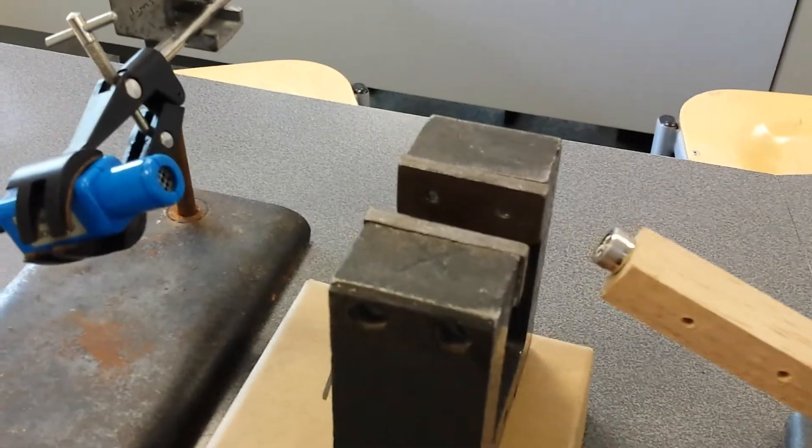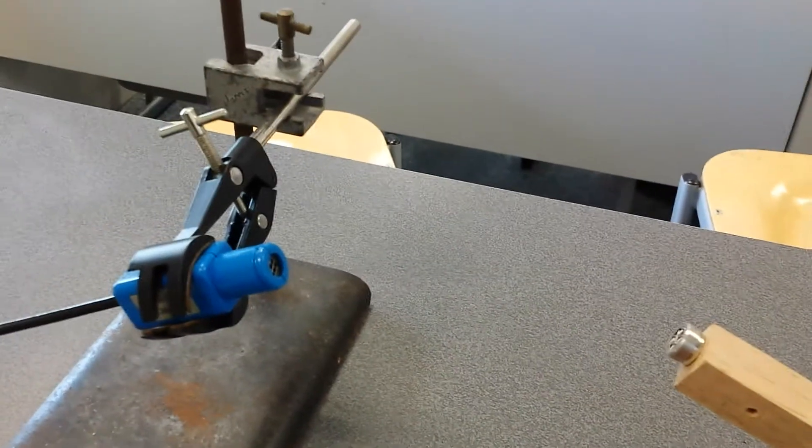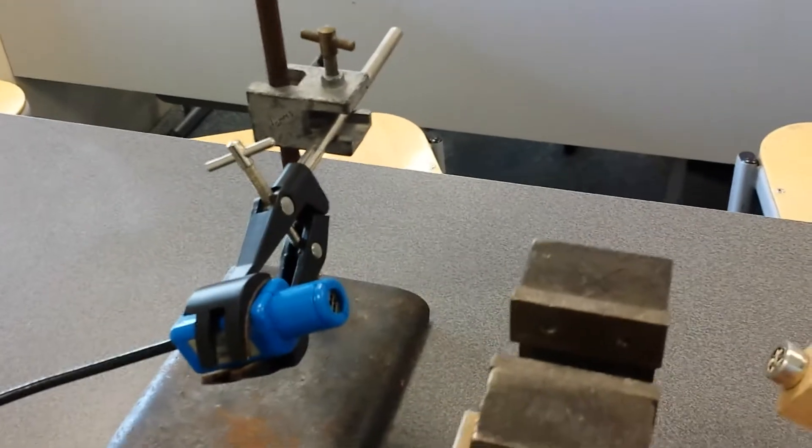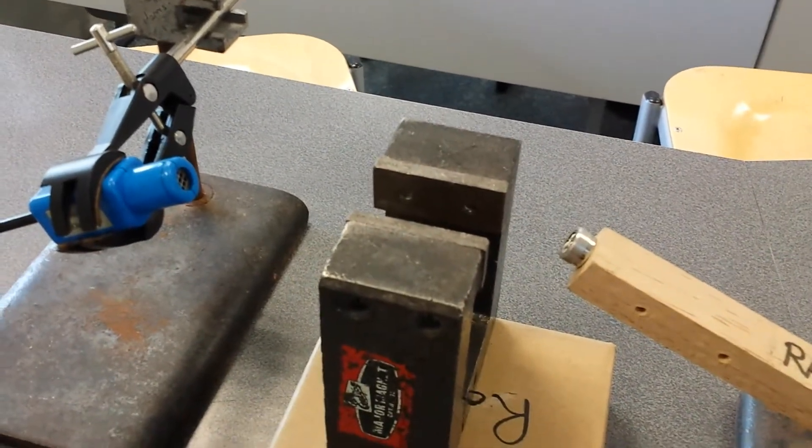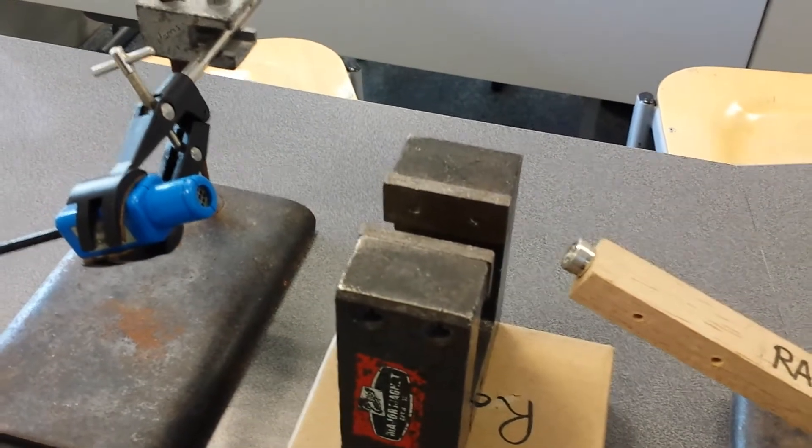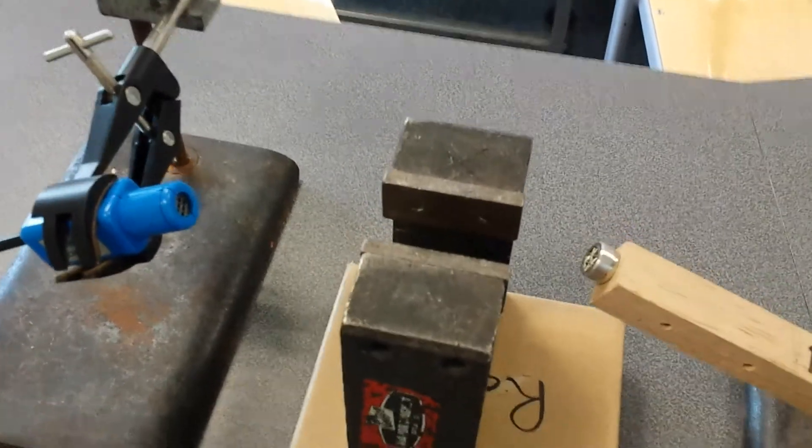Now let's see what happens if we take out the magnet and reverse the field. Suddenly the count rates have gone. We must be deflecting our beta radiation with a magnetic field.